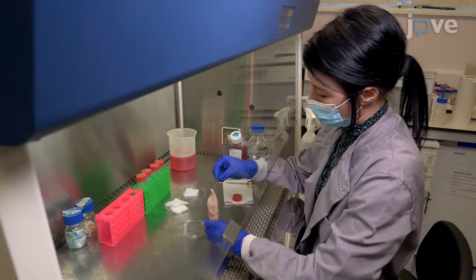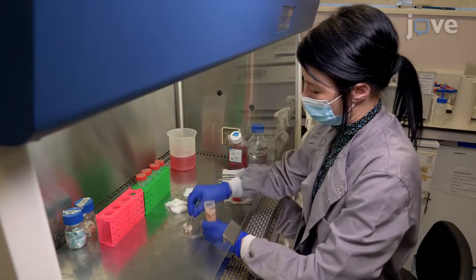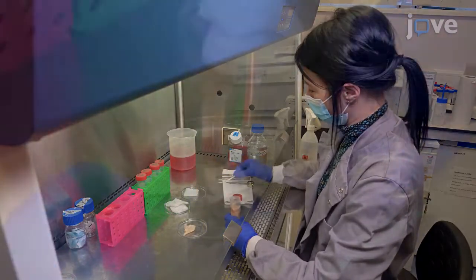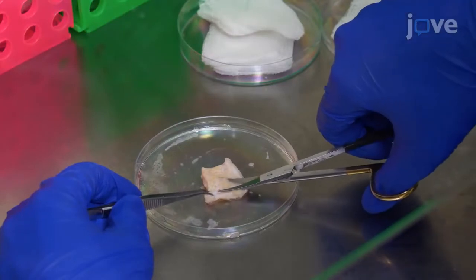To prepare a skin tissue sample for wounding, place the skin dermis side down in a 90 millimeter petri dish and use sterile scissors to remove the adipose tissue.